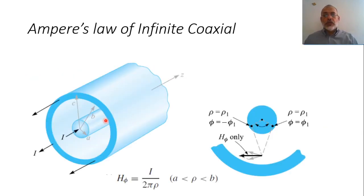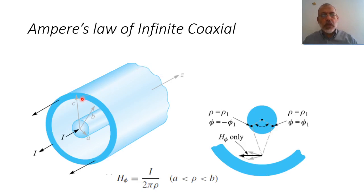Effectively, the situation would be quite complicated if you want to apply Biot-Savart law for a complex geometry like a coaxial structure. In this structure, we have a current I passing through the inner conductor, and because it is a complete circuit, after the load it passes to the outer circuit. If you are interested to find the magnetic field everywhere inside this coaxial configuration, using Biot-Savart law would be quite complicated, but using Ampere's law would be very simple.